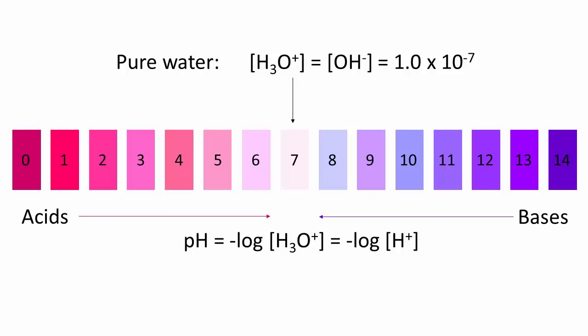For significant digits, remember that the 7 in the pH of pure water comes from the exponent. It's not a significant digit. For a pH, anything before the decimal is not a significant digit. Only the digits after the decimal are significant.